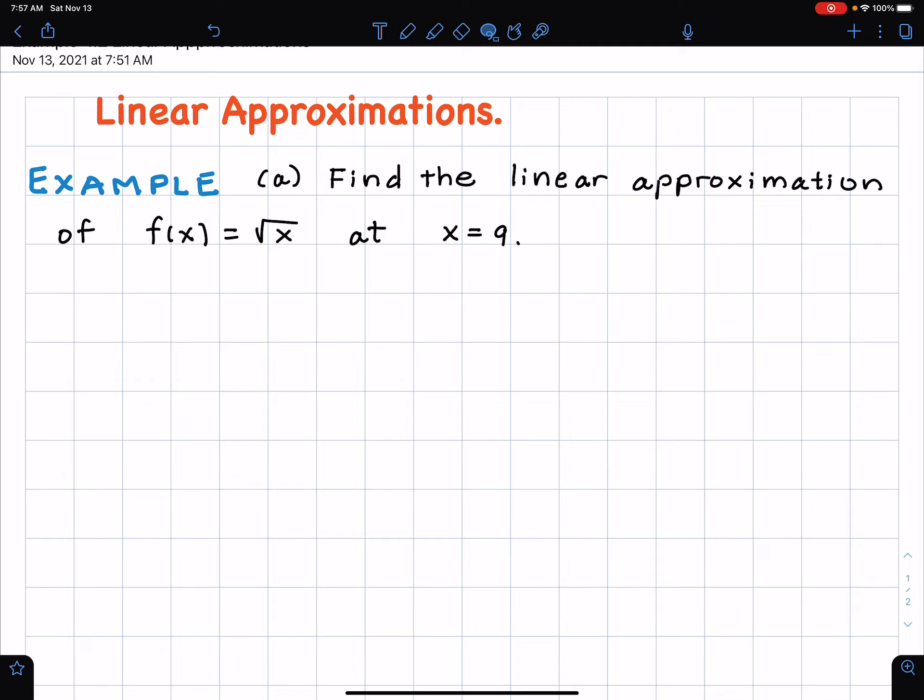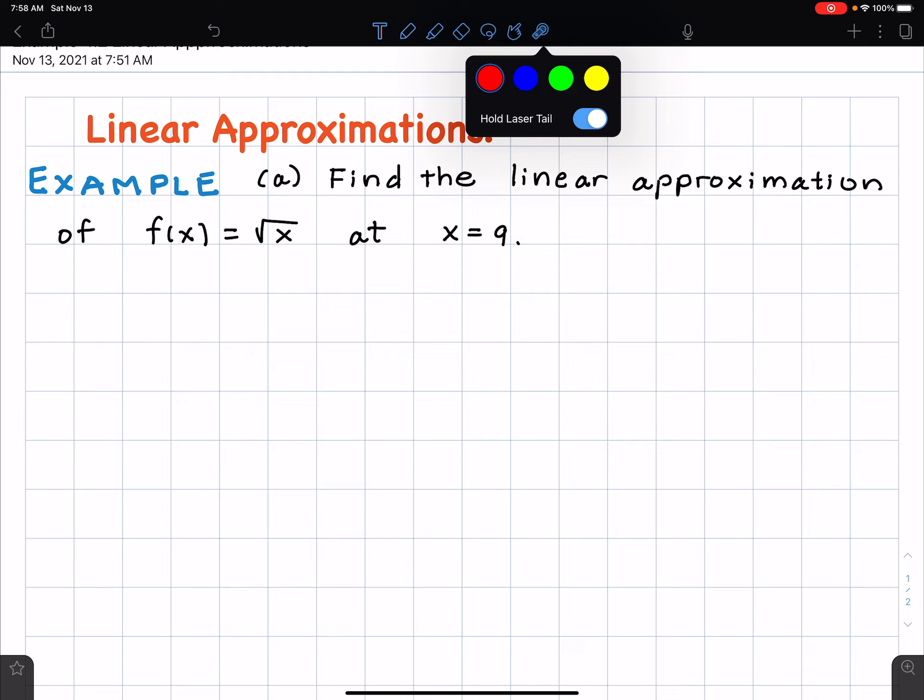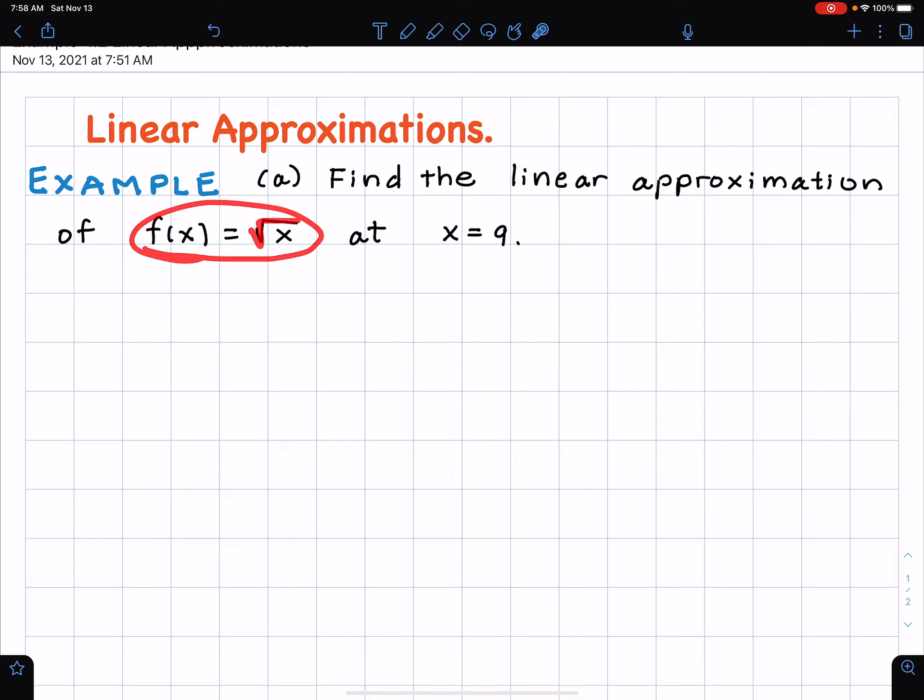Hello. In this video, we're going to talk about linear approximations, and we're going to take an example out of a book where we find the linear approximation to the function f of x equals square root of x, and it's near around x equals 9, it's the best linear approximation.